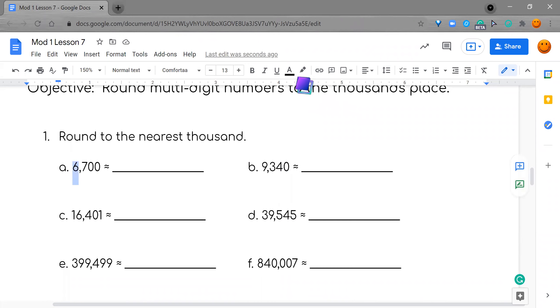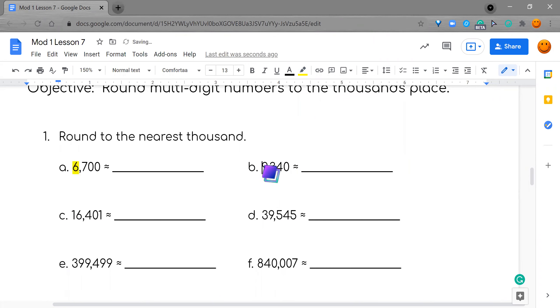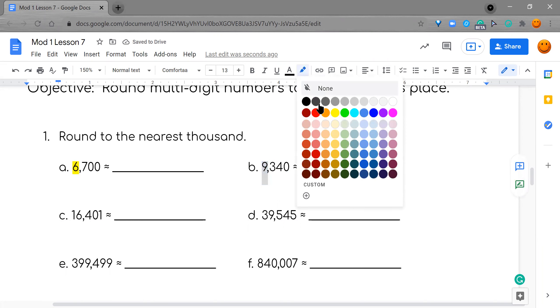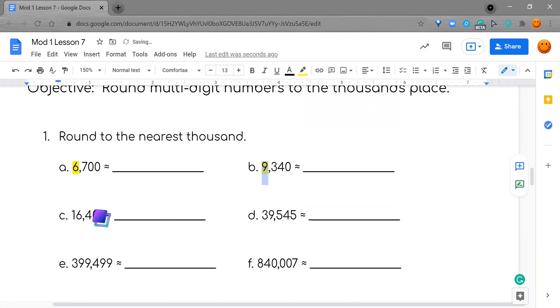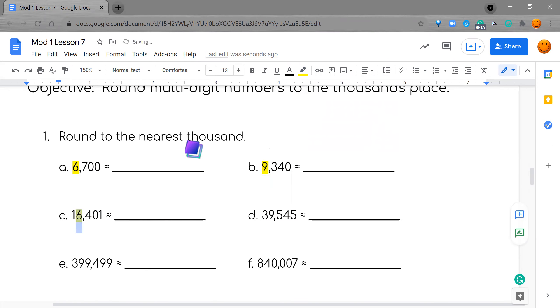Now I'm going to highlight my thousands. I'm going to do three of these with you so that you can see, and then you will have three more by yourself. If you notice, I'm just highlighting the thousands place because that's what it said, nearest thousand.